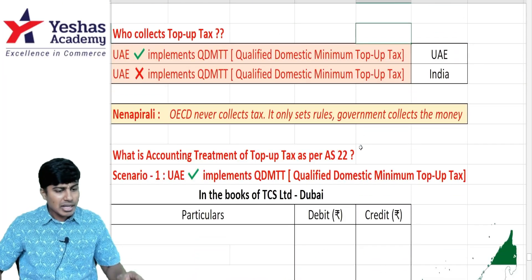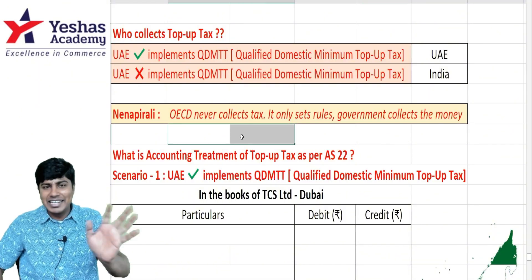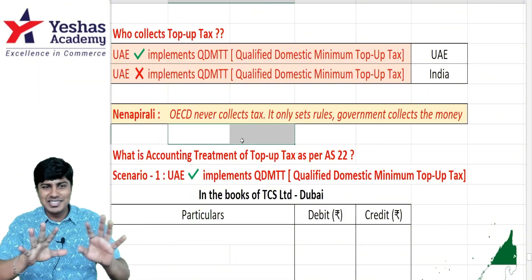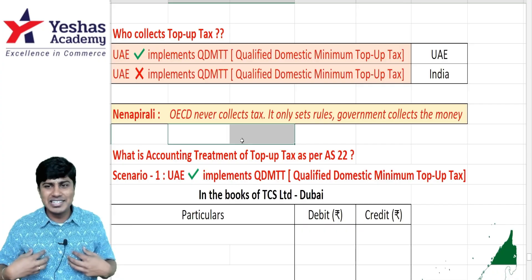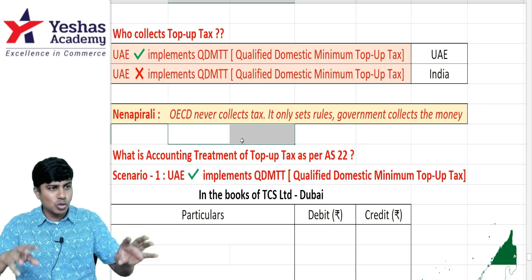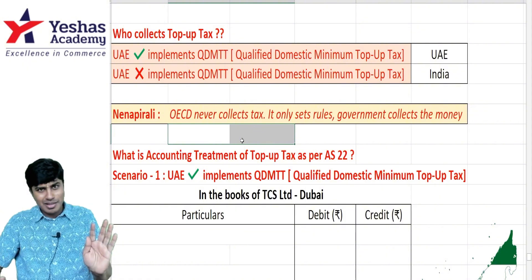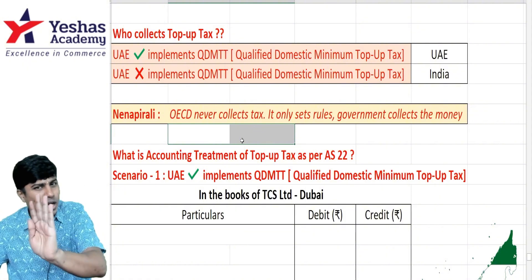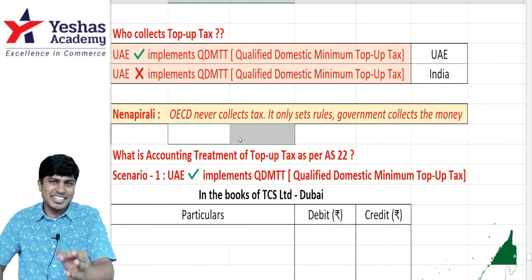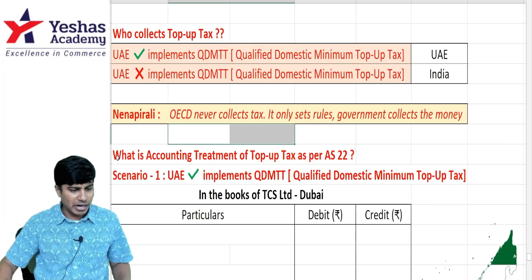One important clarification: OECD never collects tax. OECD is a body that makes the rules — like a mediator. OECD is not a government; OECD doesn't collect tax. OECD just tells who should collect how much tax. Now, what is the accounting treatment of this top-up tax as per Accounting Standard 22?